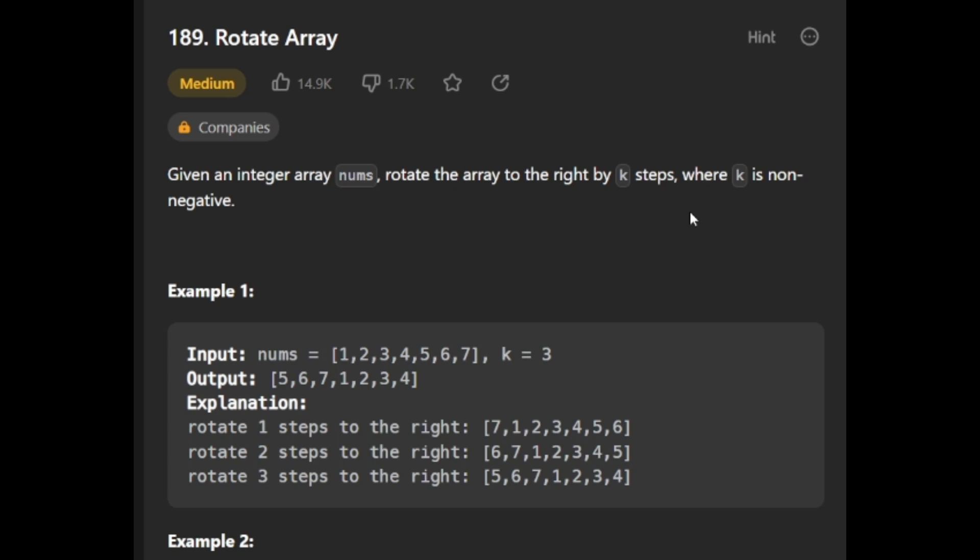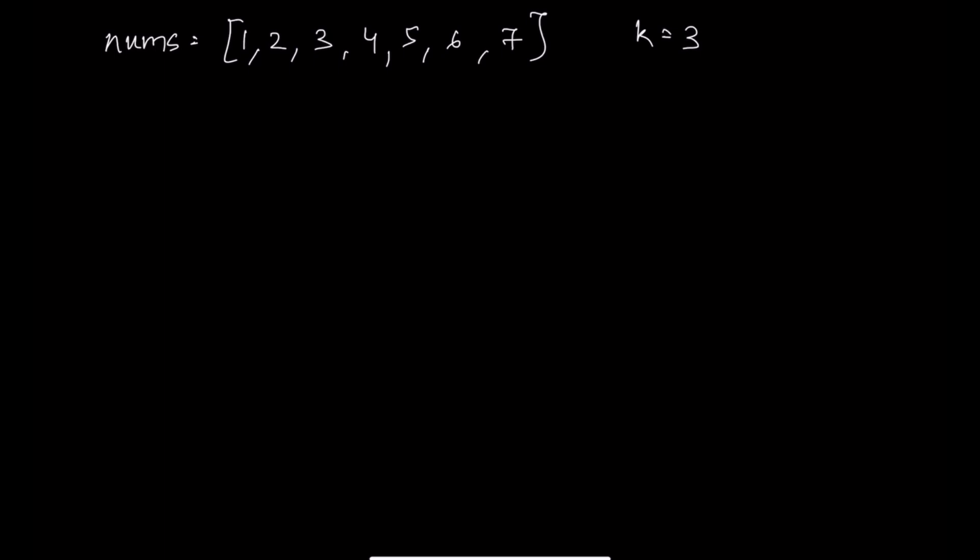Hello everyone, today we will be solving LeetCode problem 189 Rotate Array. We are given an integer array nums and we have to rotate the array to the right by k steps where k is non-negative. Let's head over to our drawing explanation and see how we can code this.